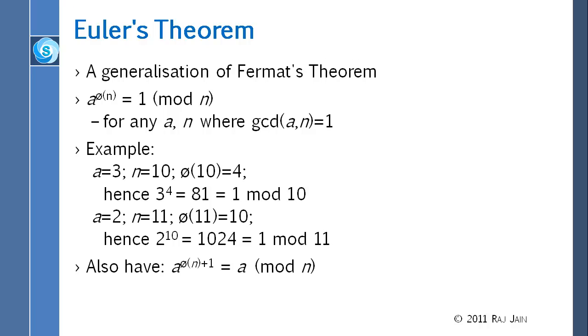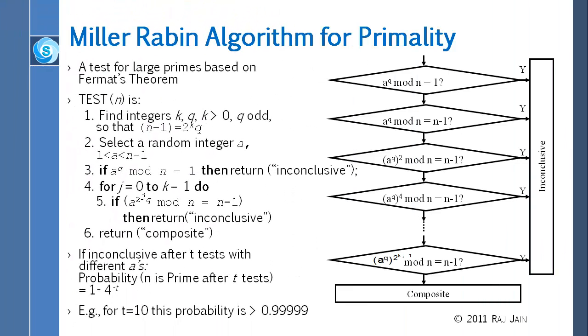Euler's theorem simply says that a raised to phi n equal to 1 mod n. Now n doesn't have to be prime. n could be product of primes. And if it is product of primes, you can calculate phi n by subtracting 1 from each factor and then multiplying all of them. So you can calculate phi n. And once you know phi n, then you can calculate any a where the a is relatively prime to n.